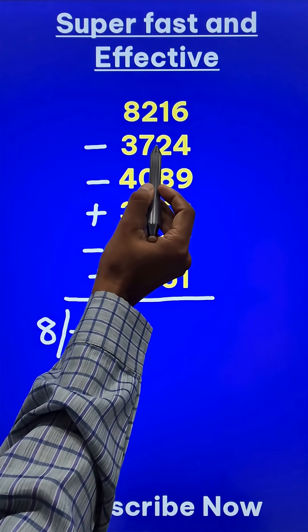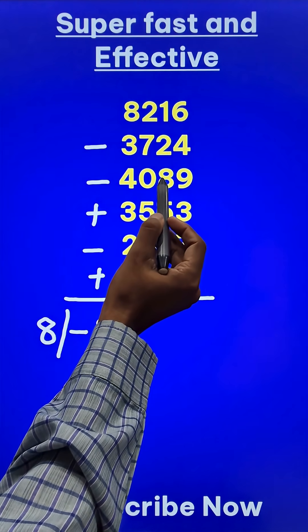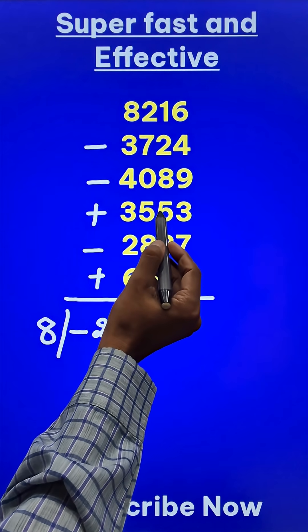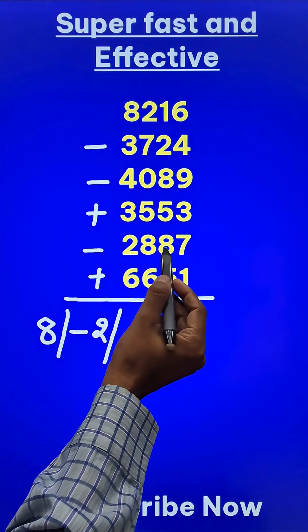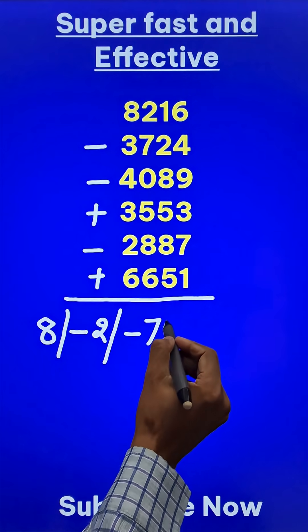Likewise the third digits, 1 minus 2 is minus 1, minus 1 minus 8 is minus 9, minus 9 plus 5 is minus 4, minus 4 minus 8 is minus 12 and plus 5 is minus 7.